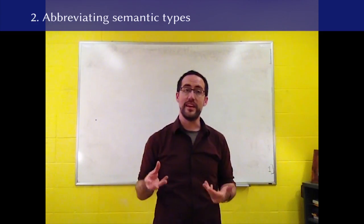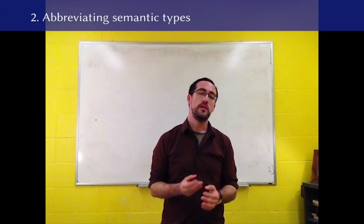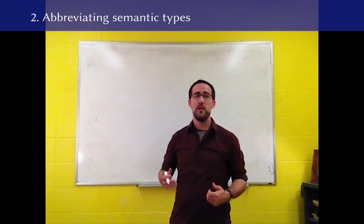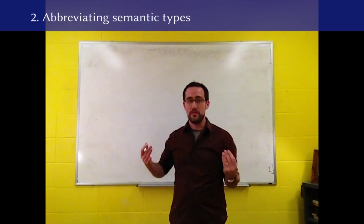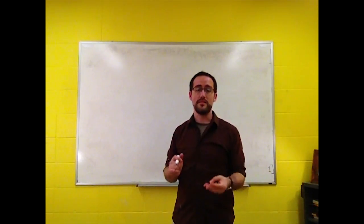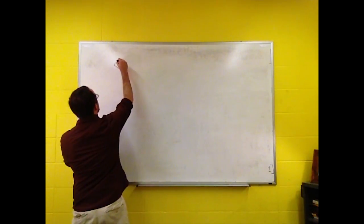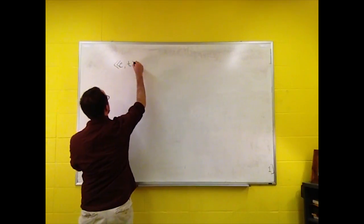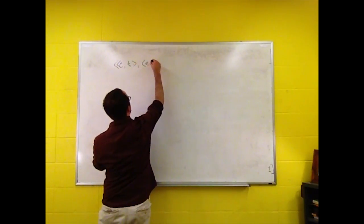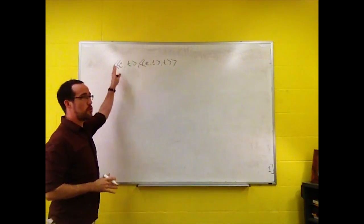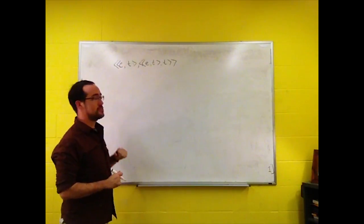So we've seen how we can abbreviate our lambda functions, but we can also abbreviate types. As we've seen, types can get really convoluted when we start making them very complex, and they have a lot of arguments that have functions and so forth. So to take an example, ET, ETT, this is just a forest of brackets and so forth.